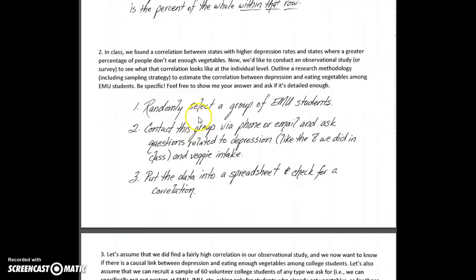Somehow you need to contact the group that you randomly select. You might look at the mailboxes — someone in class mentioned that, which was a great idea. Mailboxes, yearbooks, some way to get a list of all students. Randomly select them, contact them. Somehow you need to measure their depression score and measure their veggie intake — just what they are currently doing — then put it into a spreadsheet and look for a correlation.